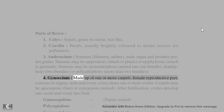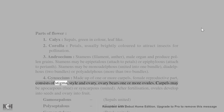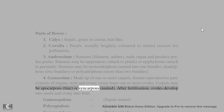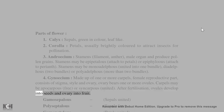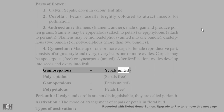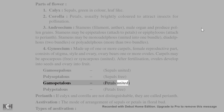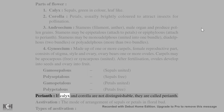(4) Gynoecium — made up of one or more carpels; female reproductive part consisting of stigma, style, and ovary. Ovary bears one or more ovules. Carpels may be apocarpous (free) or syncarpous (united). After fertilization, ovules develop into seeds and the ovary develops into fruit. Gamosepalous: sepals united. Polysepalous: sepals free. Gamopetalous: petals united. Polypetalous: petals free. Perianth: if calyx and corolla are not distinguishable, they are called perianth.